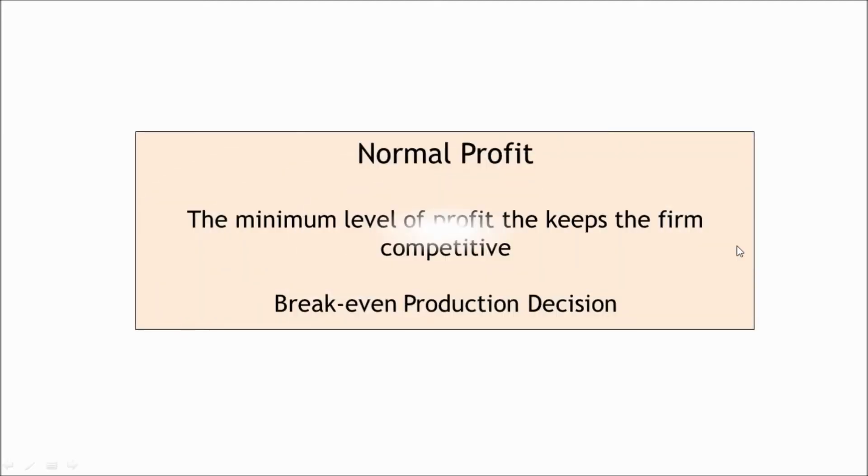In our preceding video, we learnt about when a firm earns supernormal profit. Let us now see the case of normal profit — the minimum level of profit that keeps the firm competitive.